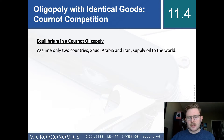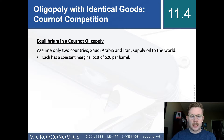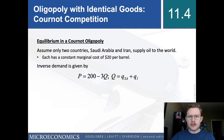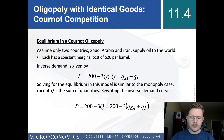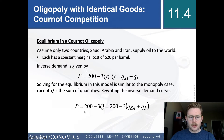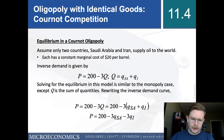Let's do a real-world example. Assume there are only two countries that supply oil to the world: Saudi Arabia and Iran. Each has a constant marginal cost of $20 per barrel. Their inverse demand is given by P equals 200 minus 3 times capital Q, where capital Q is equal to the quantity Saudi Arabia produces plus the quantity Iran produces. Rewriting this inverse demand curve by substituting in capital Q, we have price equals 200 minus 3 times (Q Saudi Arabia plus Q Iran).